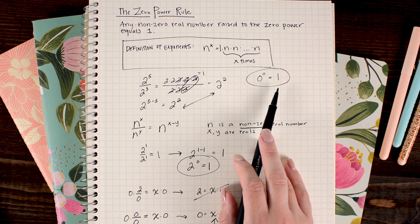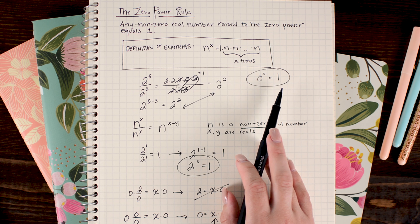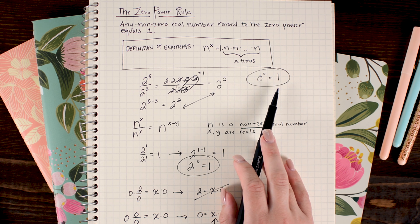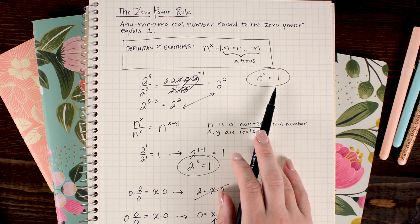Again, it's highly debated and you're likely to run into some people that are going to argue otherwise. But I think for most purposes you can define 0 to the 0 power as 1.